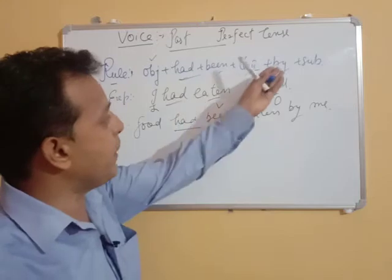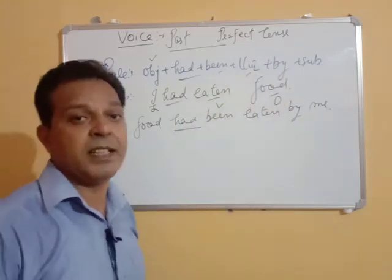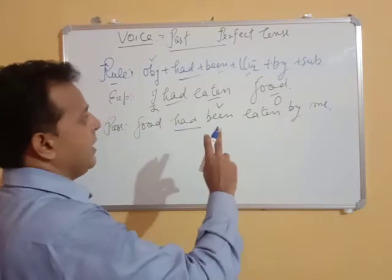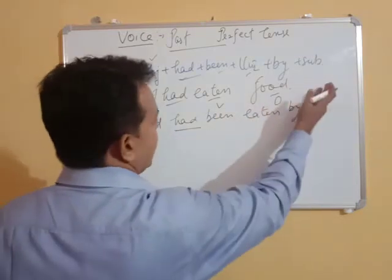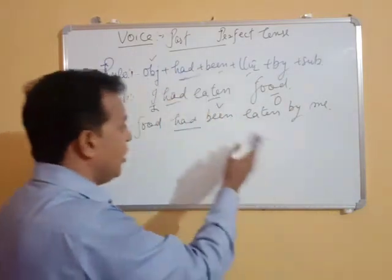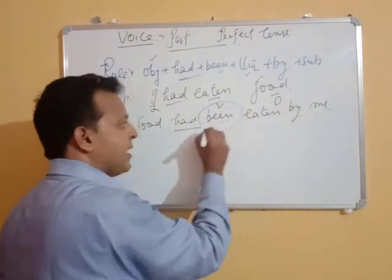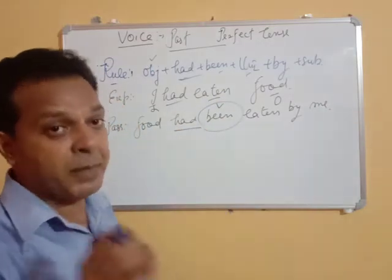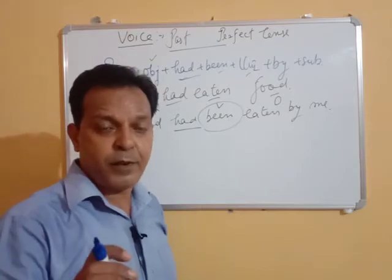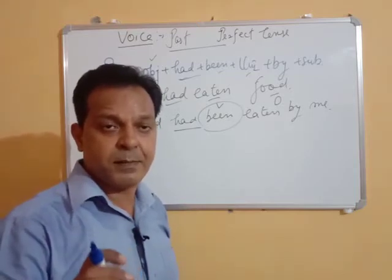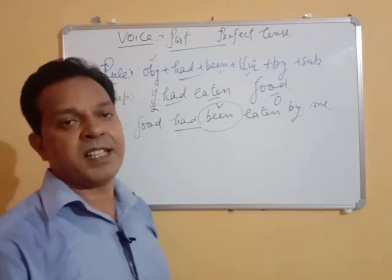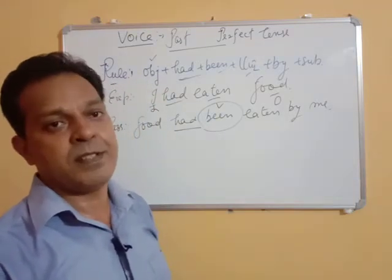'Had' was already there. We are used to putting 'by subject' at the end. What do we have to change? We just have to bring the object forward first, bring the subject back with 'by,' and add one extra word — 'been' — which by now you should have memorized. In every perfect sentence, when changing from active to passive, we use one helping verb: 'been.'